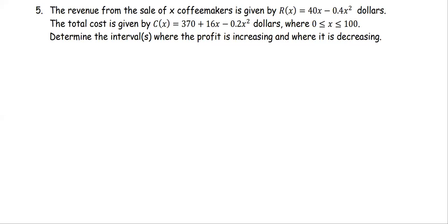In this example, the revenue from the sale of x coffeemakers is given by R(x) equals 40x minus 0.4x squared dollars. The total cost is given by C(x) equals 370 plus 16x minus 0.2x squared dollars, where x is between 0 and 100. Determine the intervals where the profit is increasing and where it is decreasing.